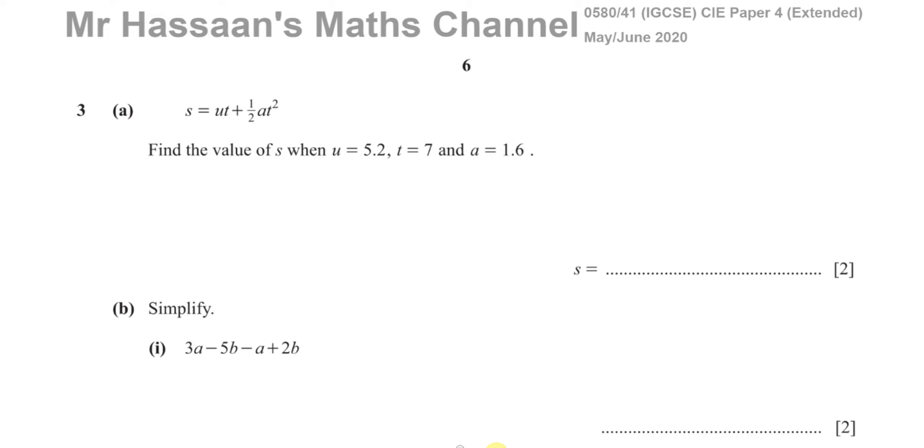Okay, welcome back. This is Mr. Hassan's Maths Channel and now we are on question number three from paper four, the 0580 International GCSE, IGCSE of Cambridge from May/June 2020. This is paper four, variant one.